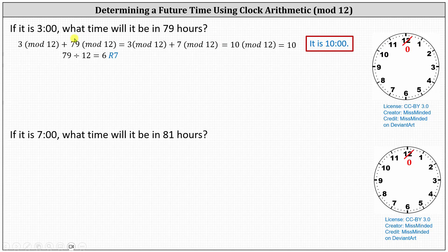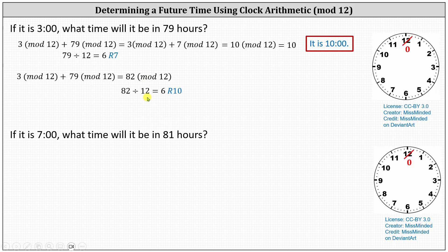Going back to the original sum, the second method is to sum three and 79 first, which gives us 82 mod 12, which equals the remainder when 82 is divided by 12. 82 divided by 12 equals six with a remainder of 10, indicating 82 mod 12 equals 10, giving us the same time of 10 o'clock.